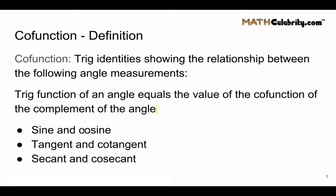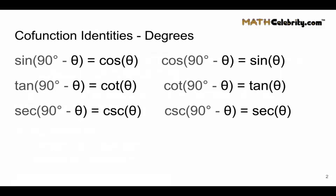As you see the three groups below, sine and cosine are co-functions of each other, tangent and cotangent are co-functions of each other, and secant and cosecant are co-functions of each other.